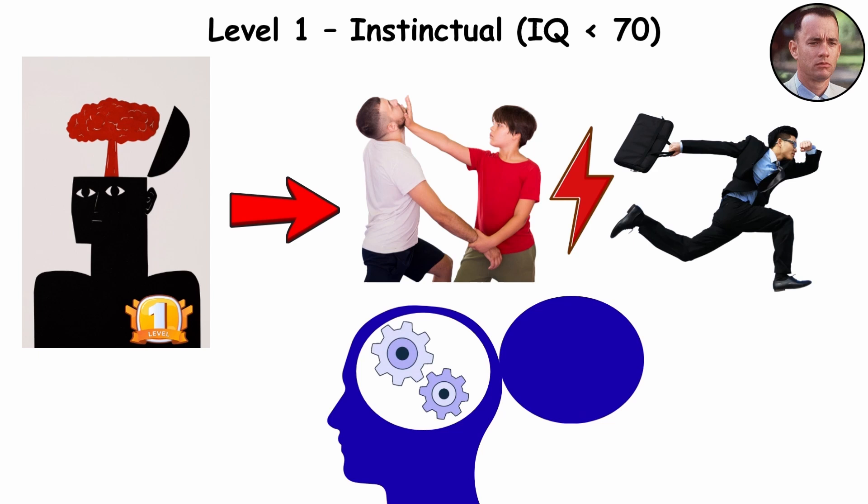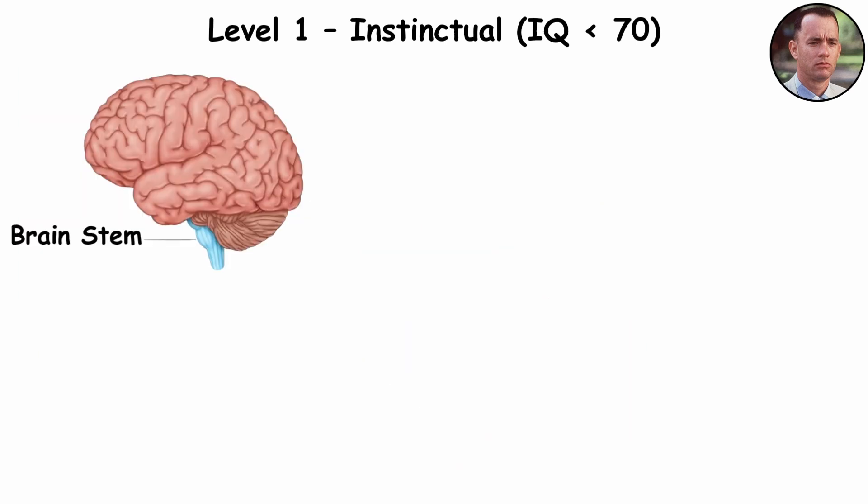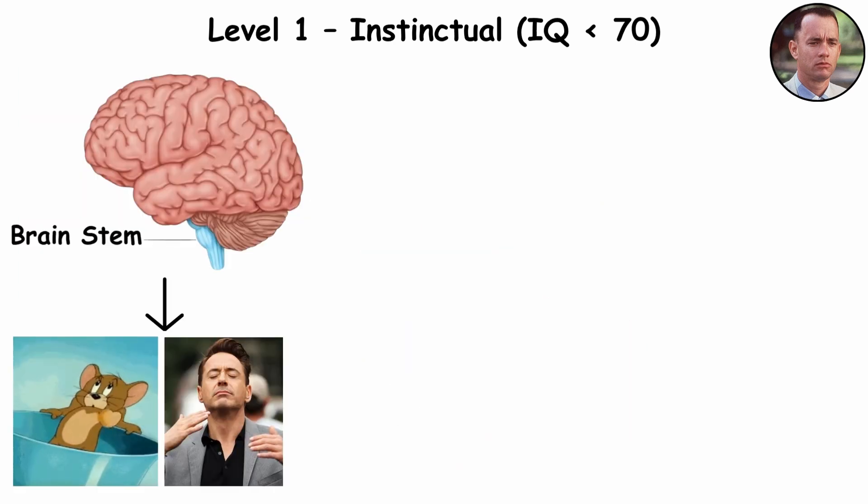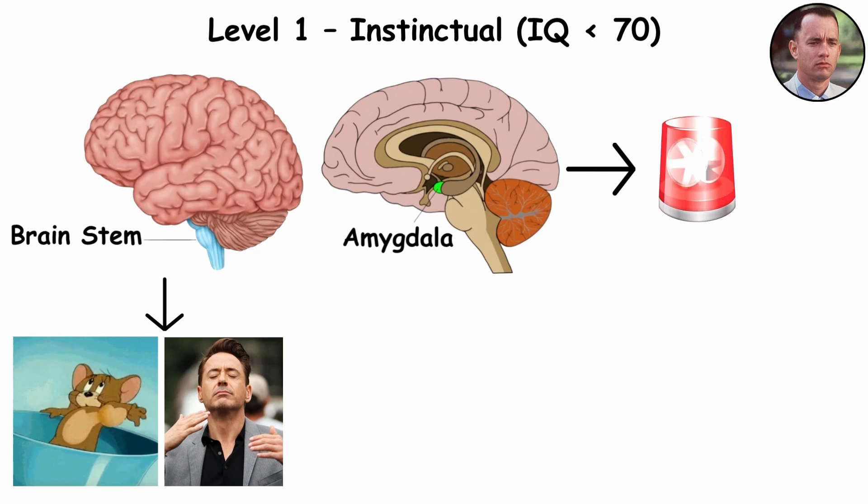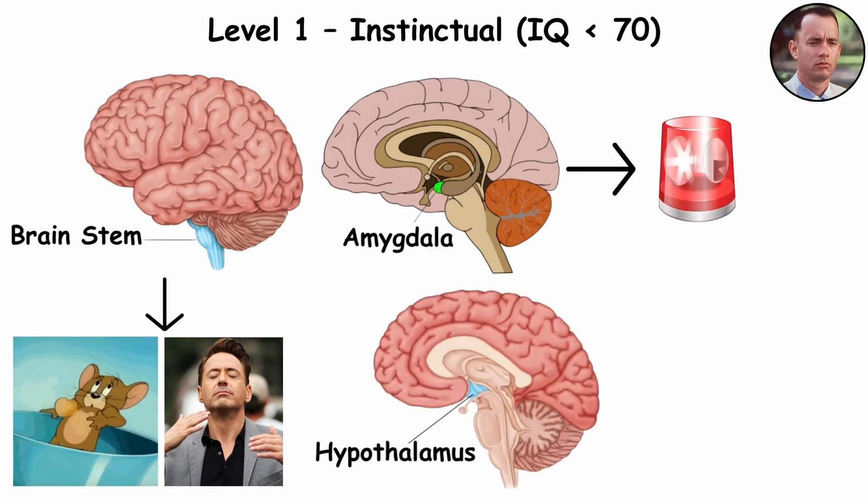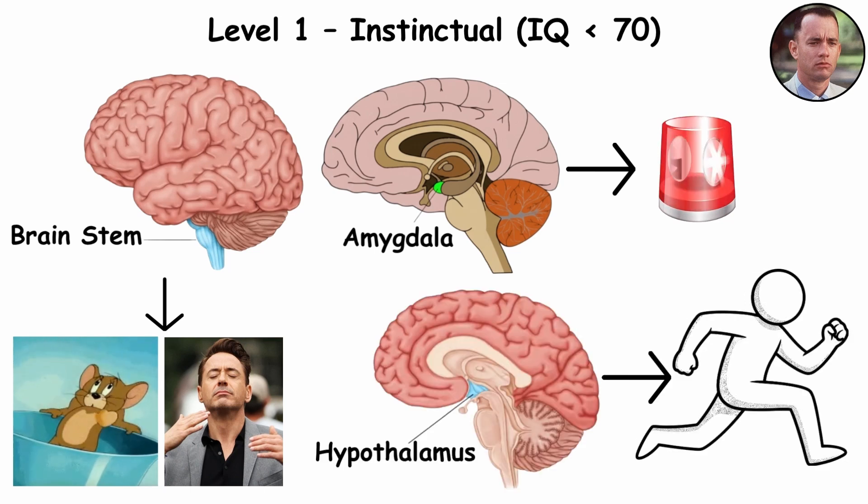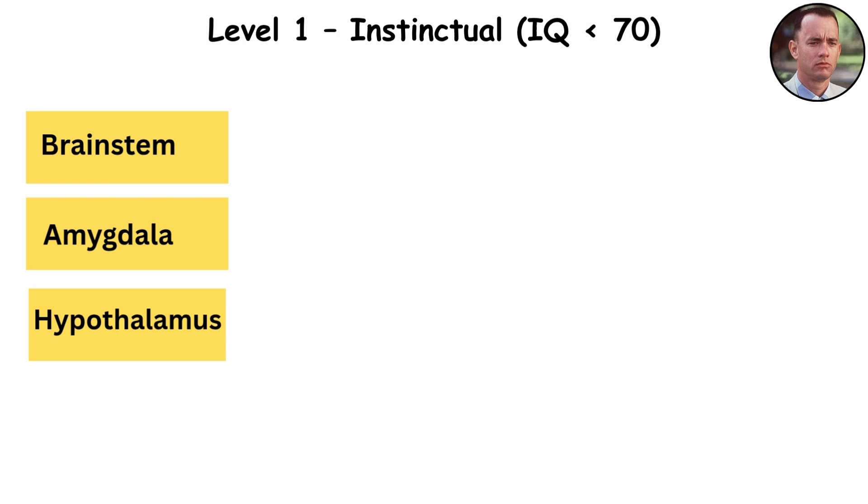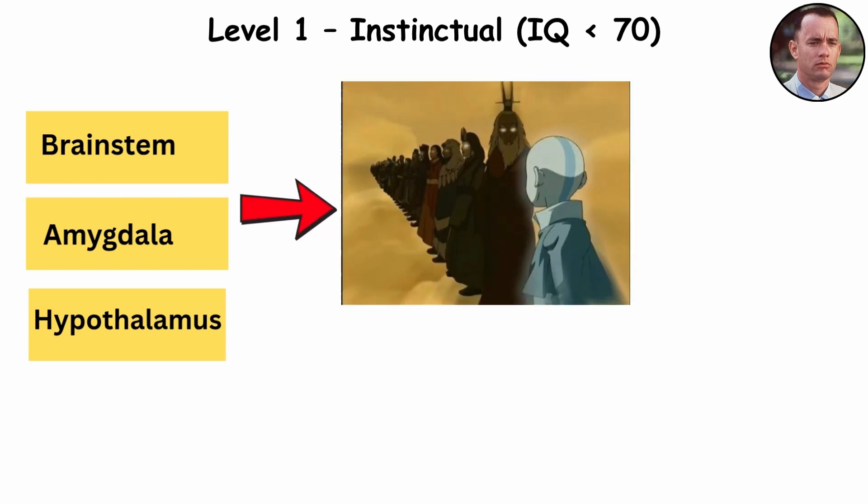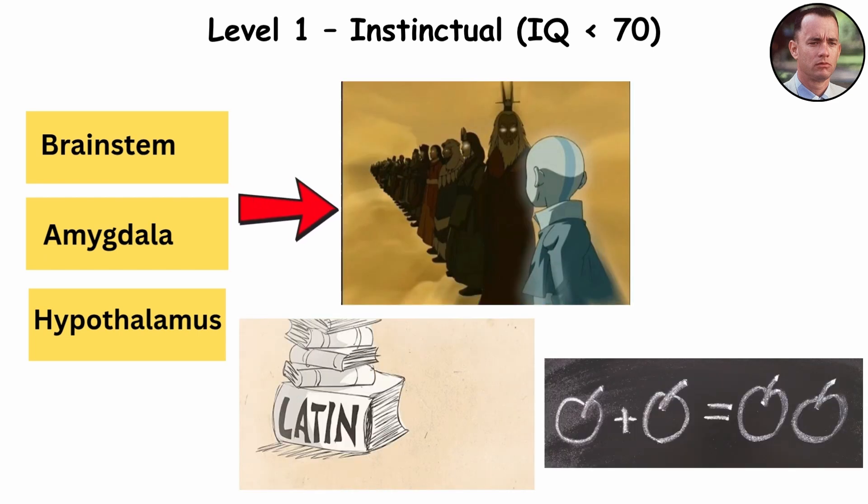Underneath it all, tiny ancient circuits are at work. The brainstem controlling heartbeat and breathing. The amygdala, sounding the alarm when something feels off. And the hypothalamus kicking the body into motion. These are the same regions that kept our ancestors alive long before language or logic ever existed.